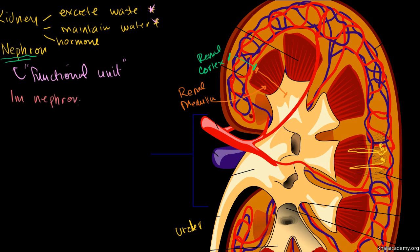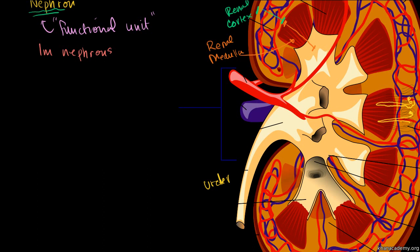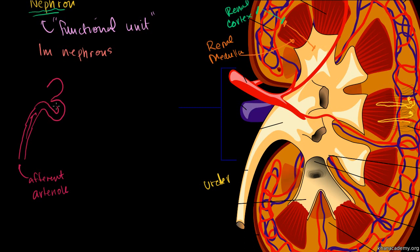Even though nephrons aren't quite microscopic — their length when they dip down is visible — you can still fit a lot of them inside one kidney. So let's actually figure out how a nephron filters the blood and makes sure that not too much water, not too much of the good stuff, ends up in the urine. Let me draw a nephron here. I'm going to start with the blood flow — blood comes in an arteriole, specifically the afferent arteriole.